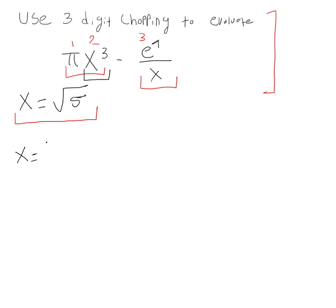First we need to find the value of the square root of 5 to three digits. If you plug the square root of 5 into your calculator you get 2.236 and so on, but we're only looking for the first three digits. So the term we're going to use is 2.23 — we chopped it, taking only the first three digits.